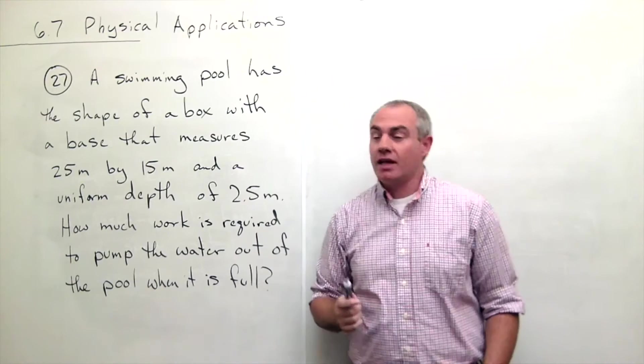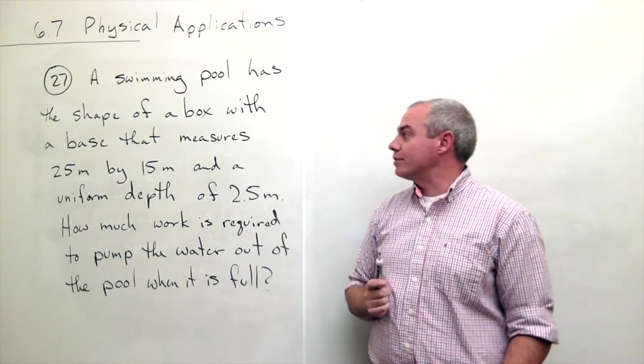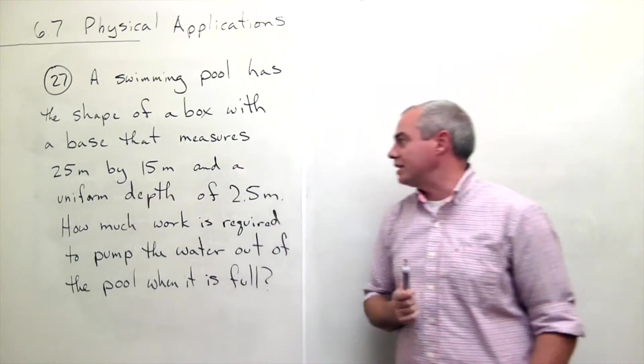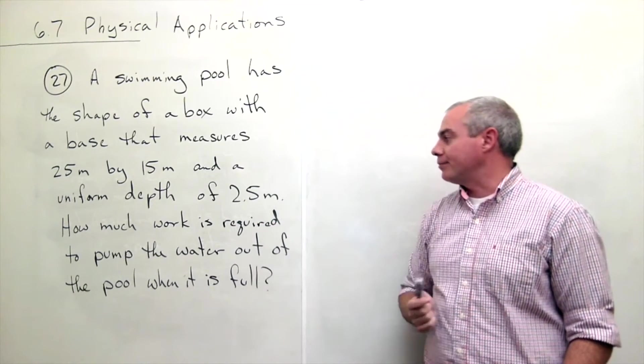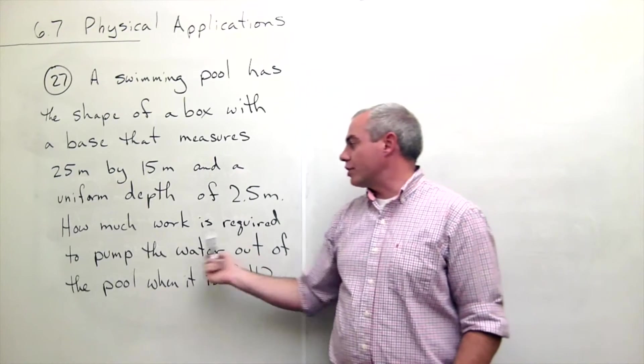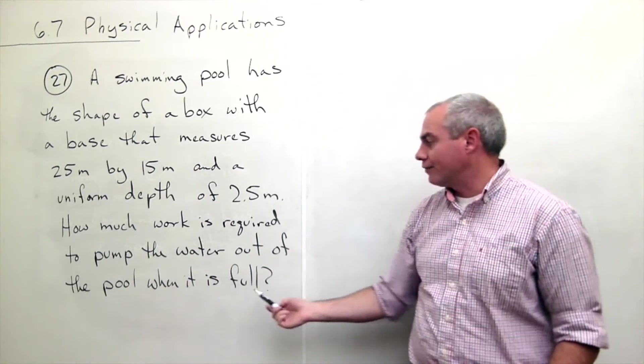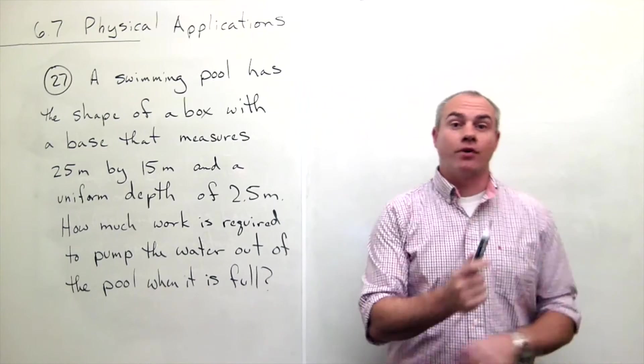A swimming pool has the shape of a box with a base that measures 25 meters by 15 meters and a uniform depth of 2.5 meters. How much work is required to pump the water out of the pool when the pool is full?